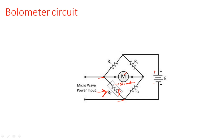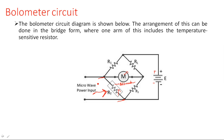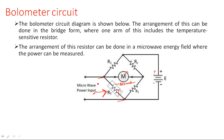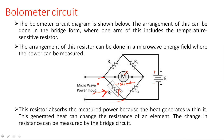The resistive element absorbs that heat and changes its resistance value. Whenever the resistance of RT changes, the bridge becomes unbalanced, and the unbalanced bridge shows some deflection. These deflections are proportional to the input energy. So the bolometer circuit is arranged in a bridge form where one arm includes the temperature sensitive resistor placed in a microwave energy field. This resistor absorbs the measured power, the generated heat changes the resistance of the element, and the change in resistance is measured by the bridge circuit.